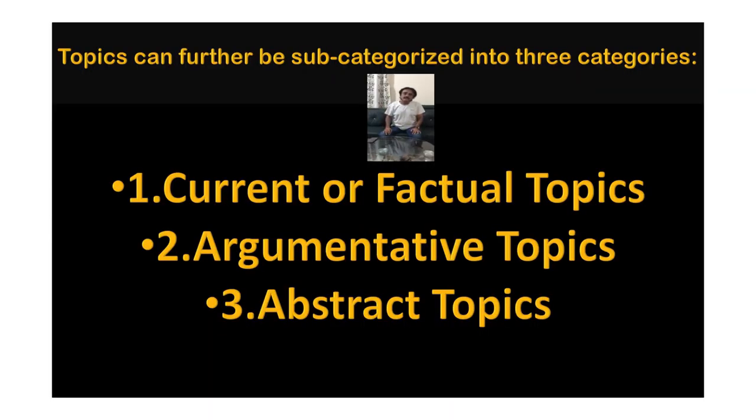Topics can be further sub-categorized into three categories: number one, current or factual topics; number two, argumentative topics; and number three, abstract topics. Current topics are based on recent issues which are factual about practical things that an ordinary person is aware of in day-to-day life and are impersonal in nature. A factual topic gives a candidate a chance to prove that he is aware of and sensitive to his environment.